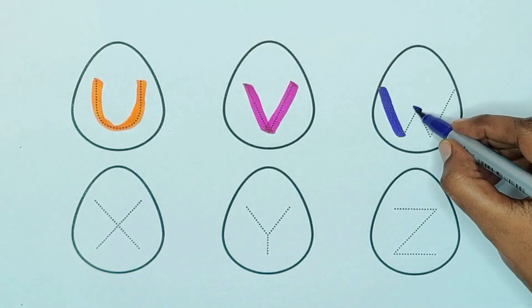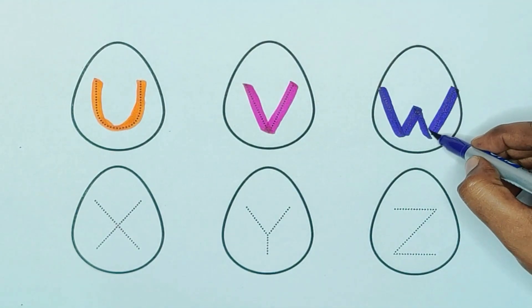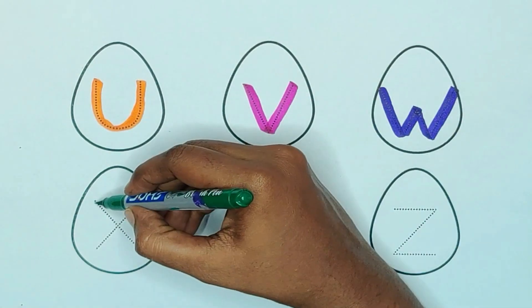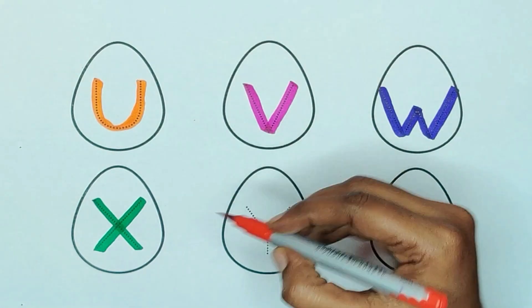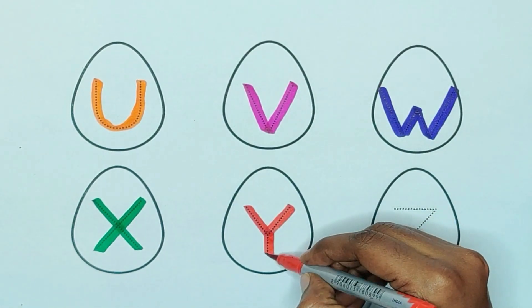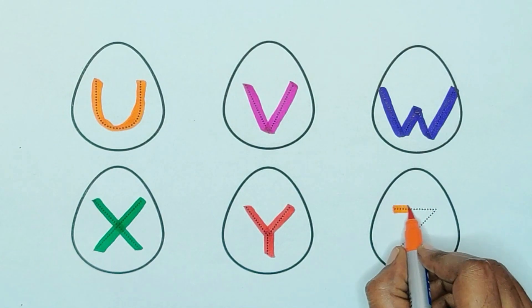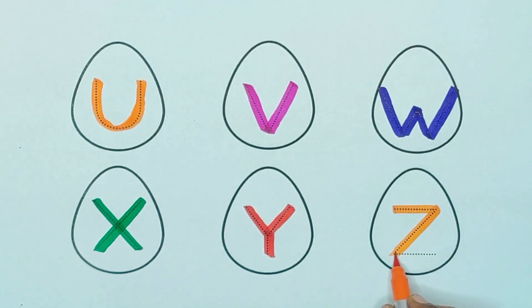Violet color W, W for watch. Green color X, X for x-ray. Red color Y, Y for yonch. Orange color Z, Z for zip.